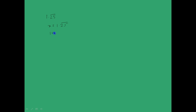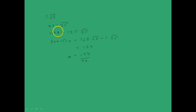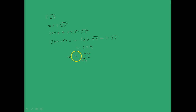We take x equal to 1.25 bar. Then 100x equals 125.25 bar, so (100 minus 1)x equals 125.25 bar minus 1.25 bar, which gives 99x = 124, therefore x = 124 by 99. A good strategy is to isolate the repeating block after the decimal point so that it cancels out when you subtract the two expressions, making it easy to find x.